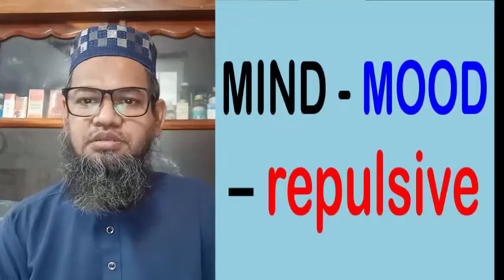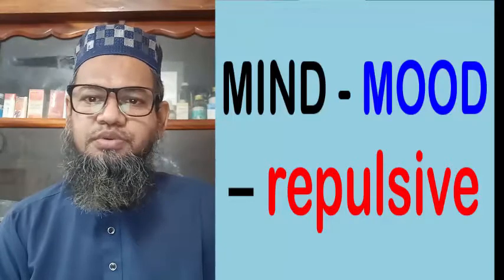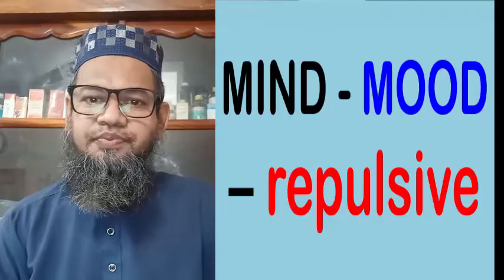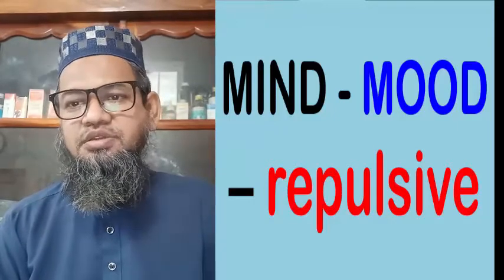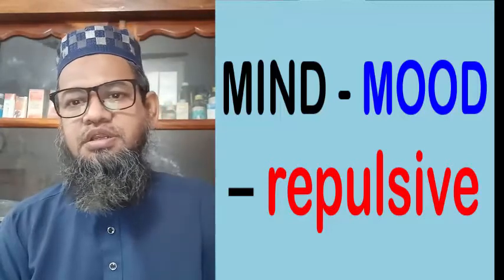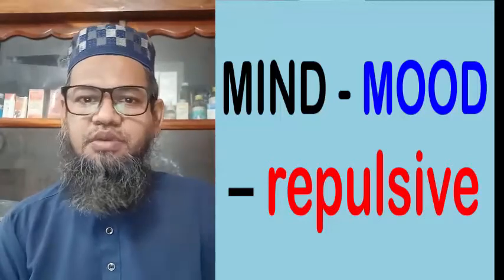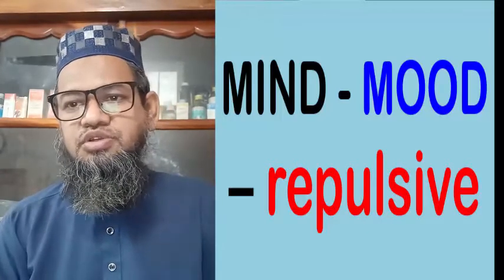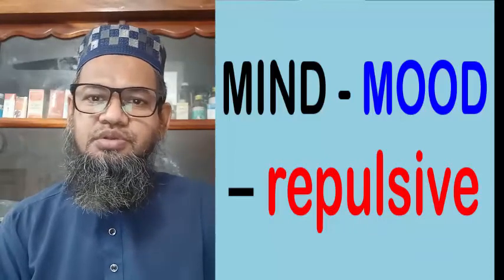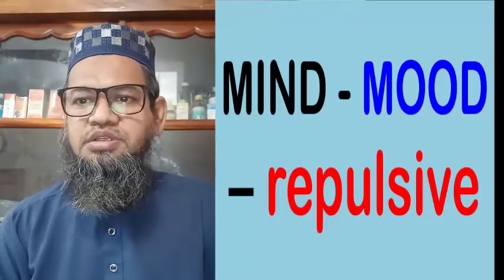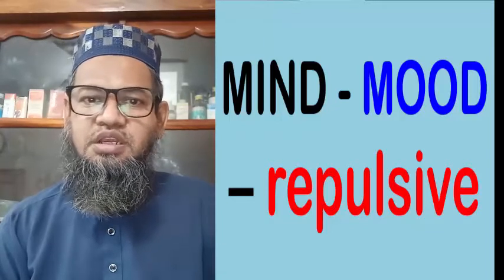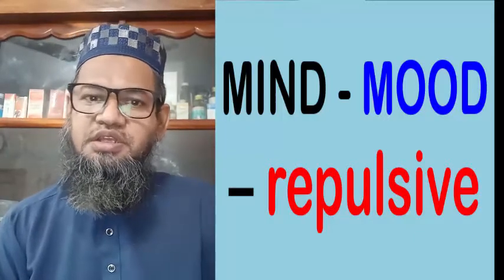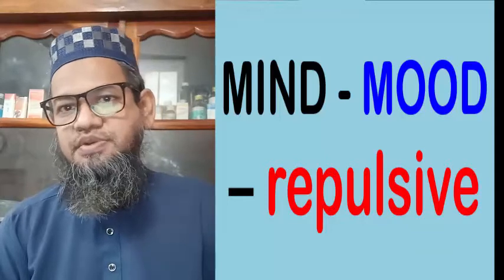Viewers, today I shall be discussing an important rubric, Mind-Mood Repulsive, from the Mind Scepter. Healing is the rhythmic movement of human physical and mental biological process or vital process, and the disruption of that rhythmic motion is disease. It can be said that the first onset of the disease is at our emotional level. That is why Dr. Kent firstly added the Mental Scepter in his repertory.